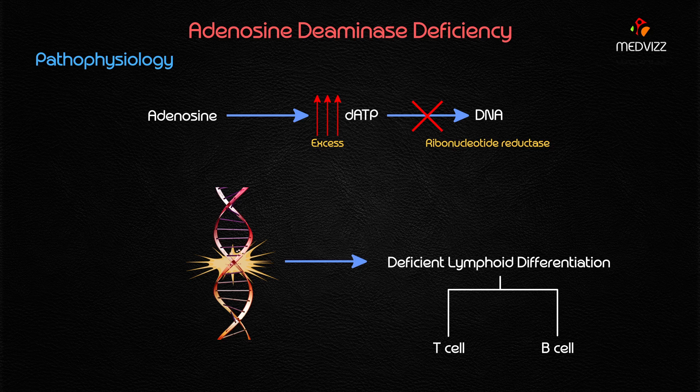Defective DNA synthesis results in deficient lymphoid differentiation, and ultimately results in dysfunctional T cells and B cells. That's what you need to know for your exam.